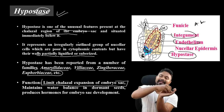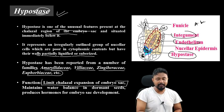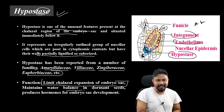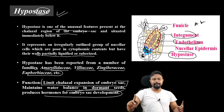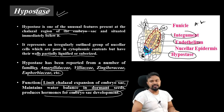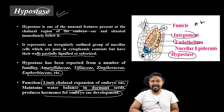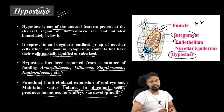The main function of the hypostase is to limit the chalazal expansion of the embryo sac. It also maintains water balance in dormant seeds and produces hormones for embryo sac development.